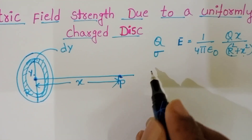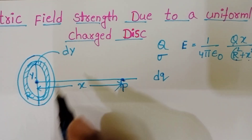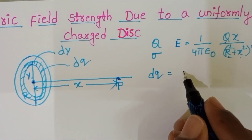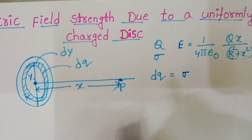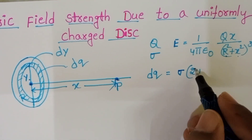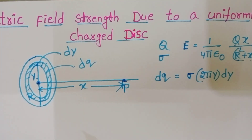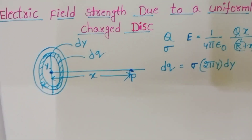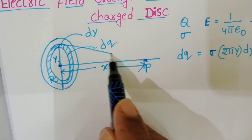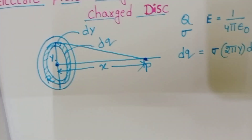Now the charge on the elemental ring, let it be dq. So dq equals surface charge density sigma multiplied by 2πy·dy, where 2πy·dy is the area of the elemental ring. So now we find the electric field strength at point P due to this elemental ring.